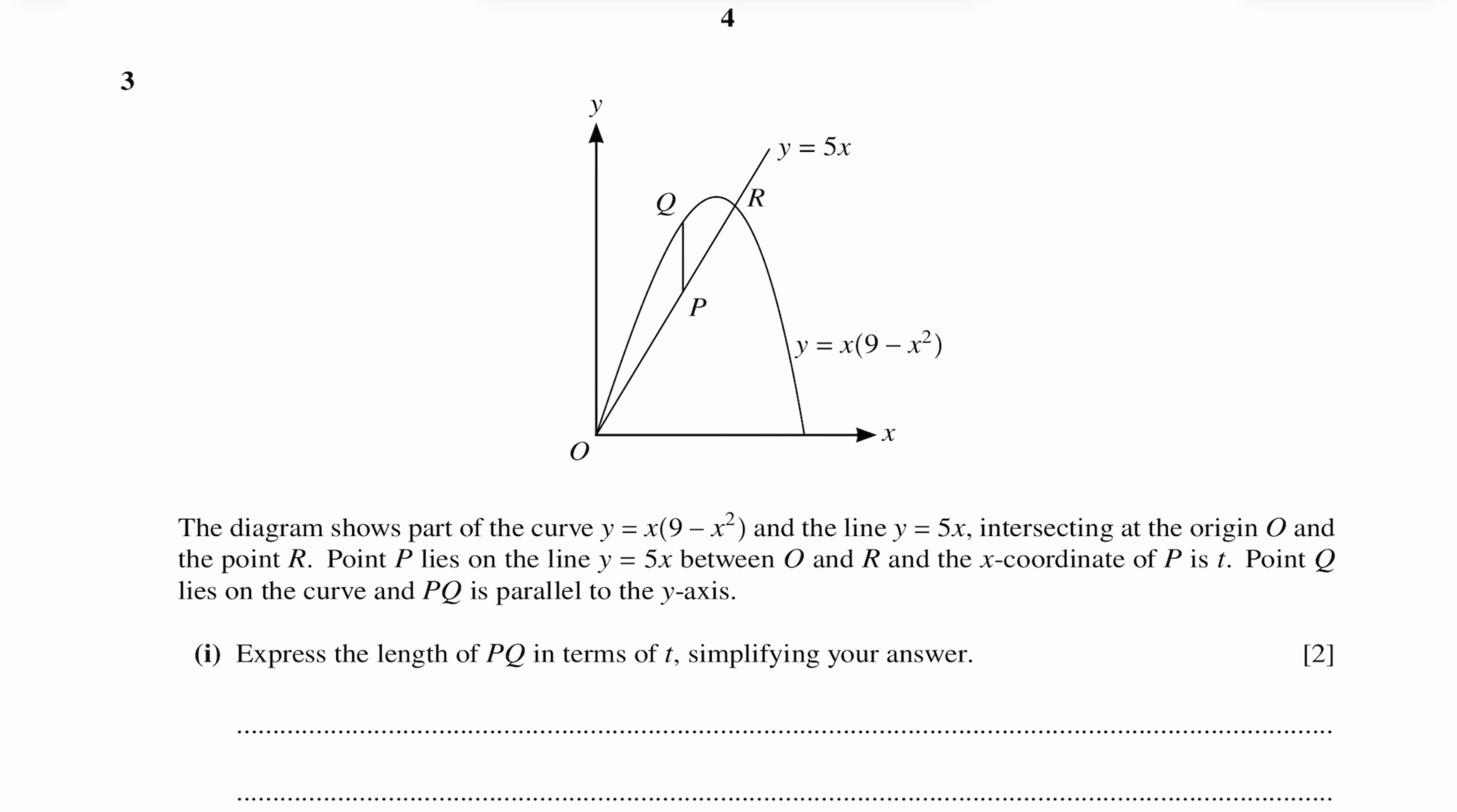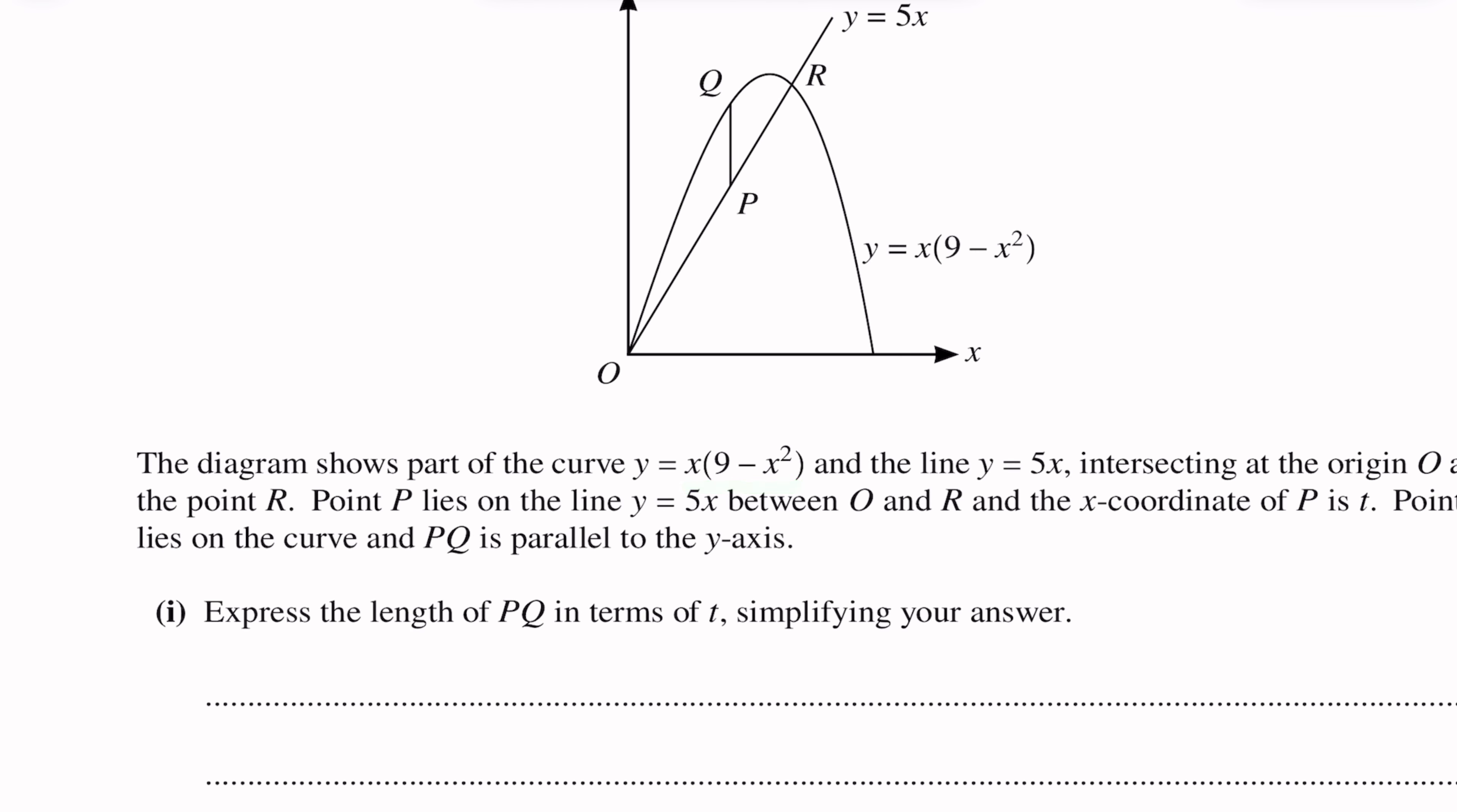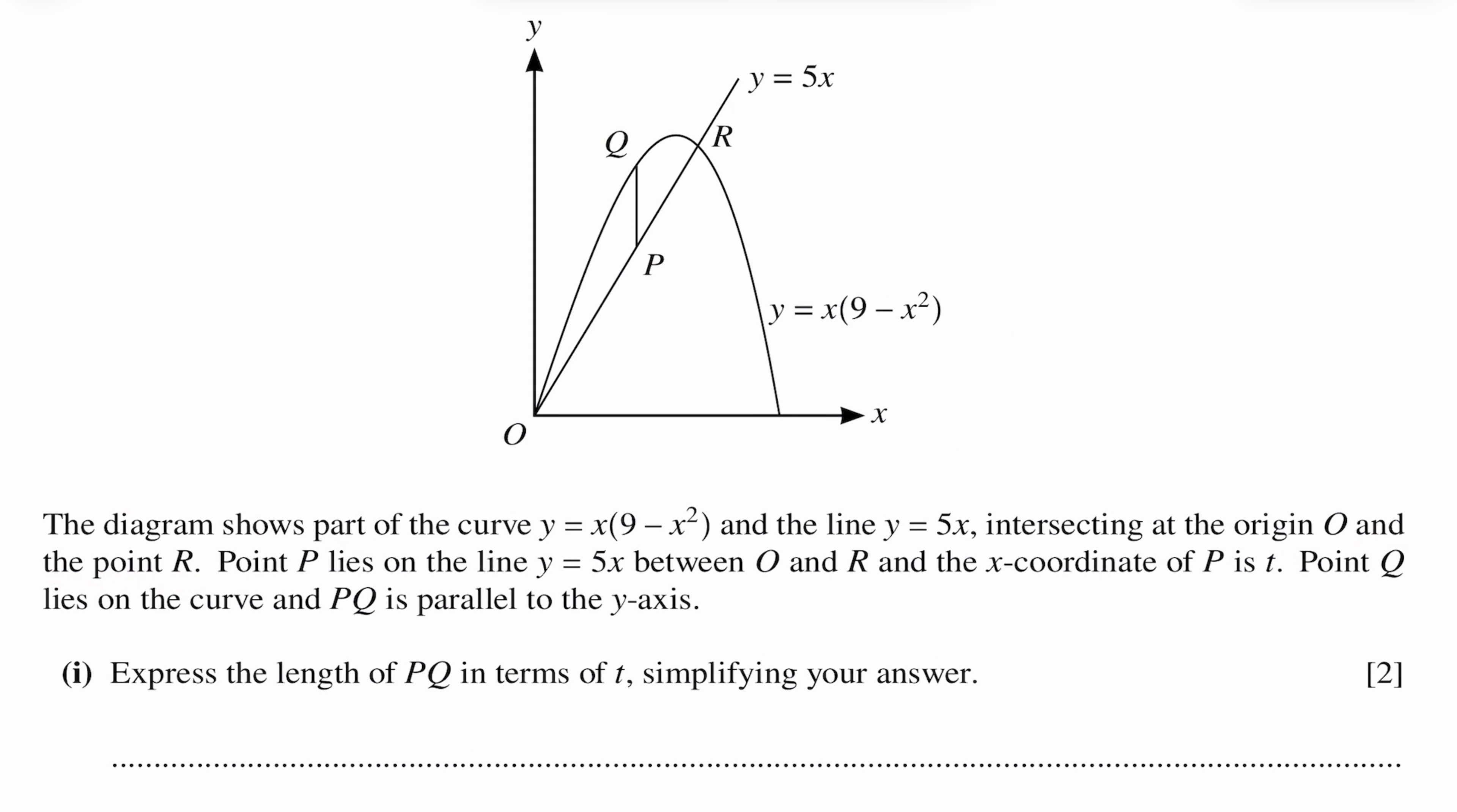Question number three. This question is of differentiation, but the first part is coordinate geometry. The diagram shows part of the curve y equals x times 9 minus x squared and the line y equals 5x intersecting at the origin O and point R. This is a curve, this is a straight line. The straight line and curve intersect at O and R. Point P lies on line y equals 5x between O and R.